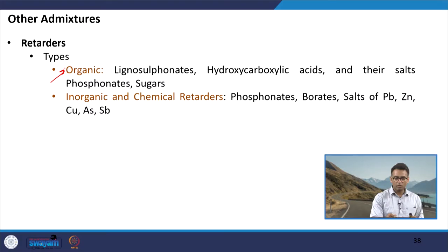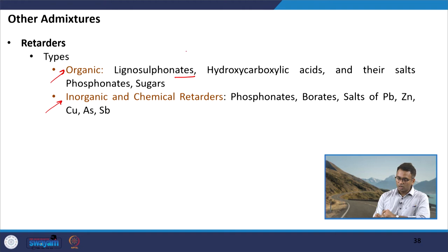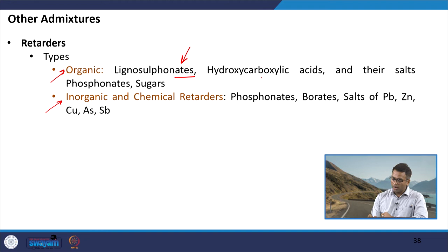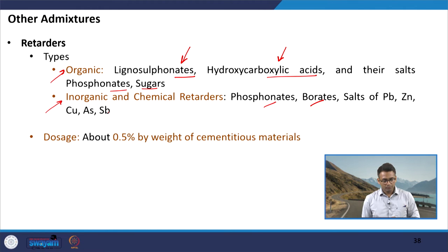Various types of materials can be used as retarders. Under the organic group we have lignosulfonates and hydroxycarboxylic acids — materials also used as plasticizers — along with phosphonates and sugars. Under the inorganic category we can have phosphonates, borates, and salts of various elements such as zinc and copper.